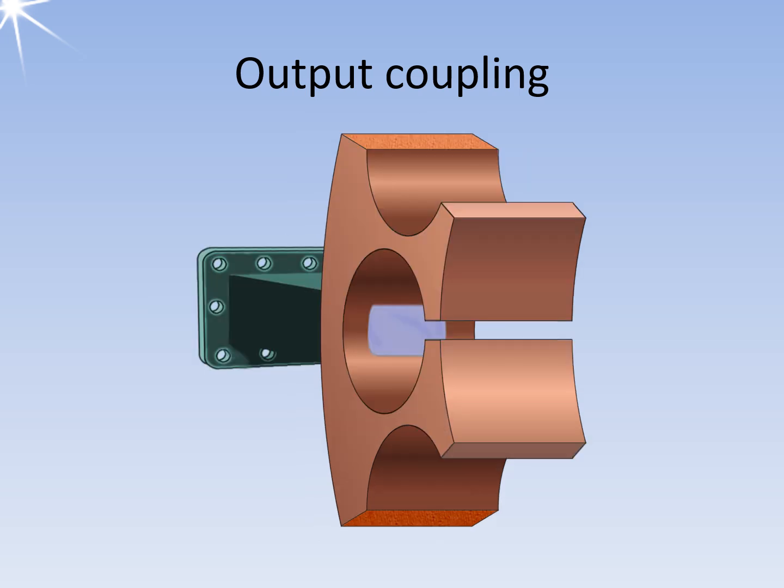A waveguide can also be connected to one of the resonators. The iris of the waveguide connection forms an obstacle for the currents of the oscillation through the inductance of the resonator. This means that the upper side has a different voltage potential than the lower side. This creates an electric field between the opposing waveguide walls, which then propagates as a TE10 wave in the waveguide.